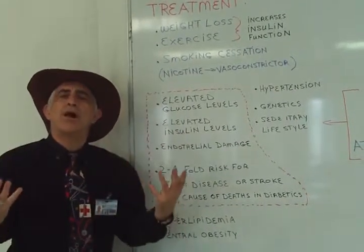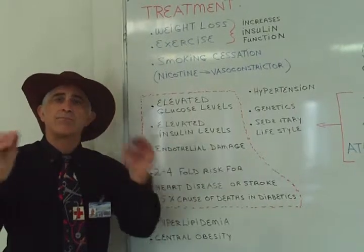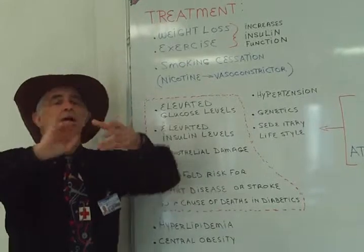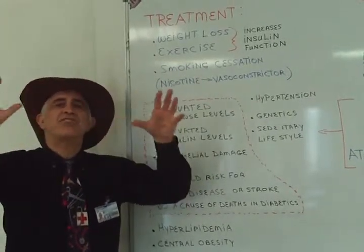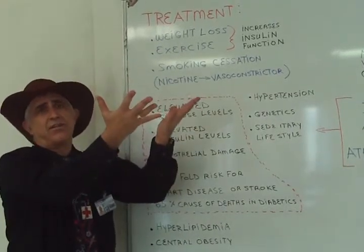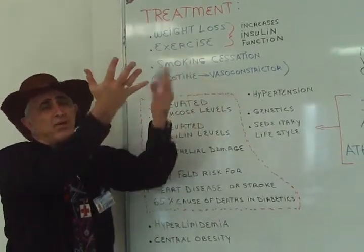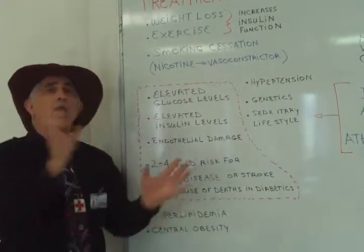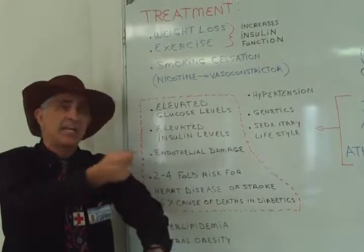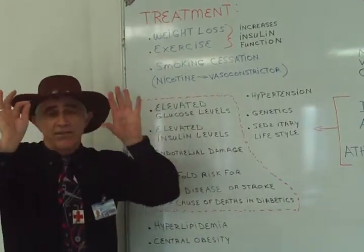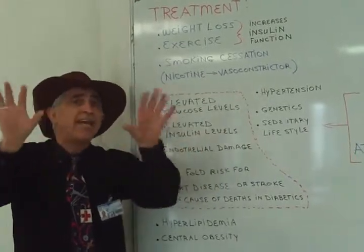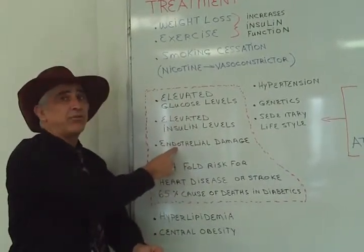Another factor that can trigger endothelial damage is elevated insulin levels — more than what a non-diabetic would have. A type 2 diabetic has problems with insulin working due to cellular resistance, so the pancreas secretes more insulin, creating a greater insulin load and endothelial damage. Similarly, a type 1 diabetic receiving exogenous insulin who requires more and more insulin also experiences that extra insulin load causing endothelial damage.